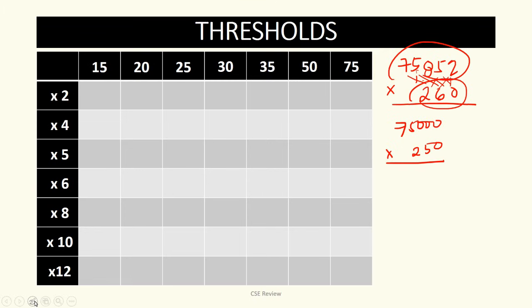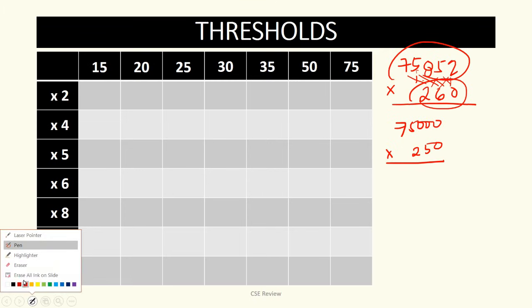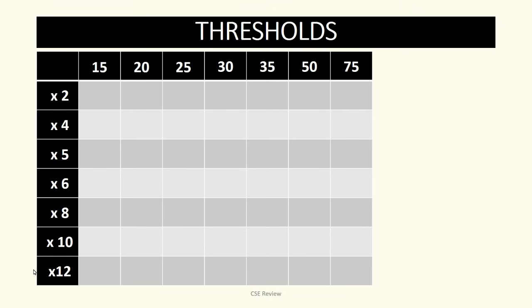In order to explain better what you need to understand, I'm going to show you this table — it's in the workbook if you have one. The reason I put it there is for you to practice thinking in thresholds. Thresholds refers to levels. You have 15, 20, 25, 30, 35, 50, 75.